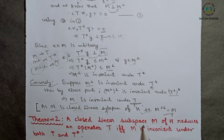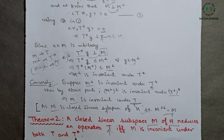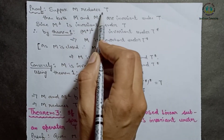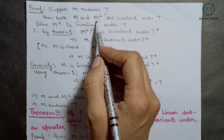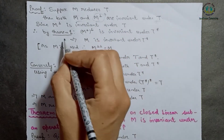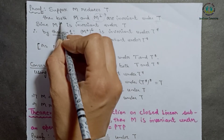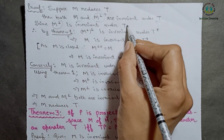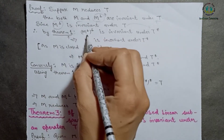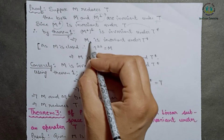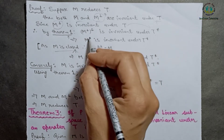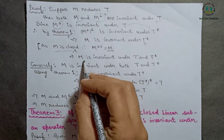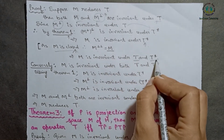Theorem 2: A closed linear subspace M of H reduces an operator T if and only if M is invariant under both T and T star. Proof: First, suppose that M reduces T. Then by definition, M and M orthogonal are invariant under T. Now M orthogonal is invariant under T. Using Theorem 1, M double orthogonal is invariant under T star. Since M is closed, M double orthogonal equals M, so M is invariant under T star.